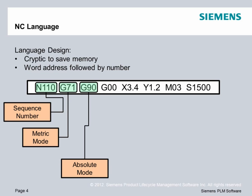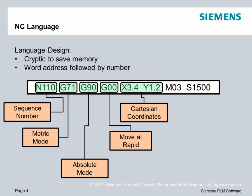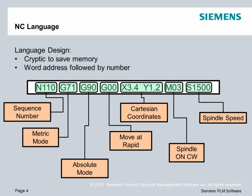Absolute mode means from a 0, 0, 0 program position, while incremental mode means I'm going to be moving this distance from my previous position. The last G-code we have is G00, which means move at rapid — the machine tool will move as fast as it possibly can to this next position. And the next position is these Cartesian coordinates. Finally, we're going to turn on the spindle speed clockwise, and the spindle speed will be 1500 RPMs.